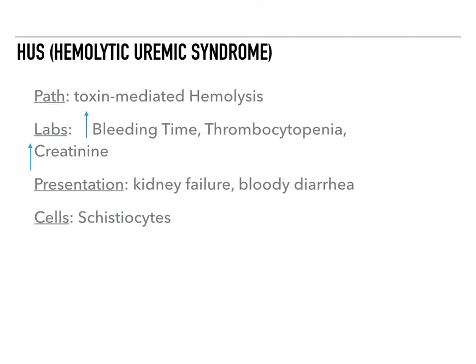The next one is HUS, or hemolytic uremic syndrome. This is a toxic-mediated hemolysis. On labs, you have destruction of platelets causing thrombocytopenia and an increased bleeding time. You also get an increased creatinine, which is very important. The presentation of HUS is that somebody is infected with a certain strain of E. coli called O157:H7, which causes a bloody diarrhea followed by kidney failure. Basically, this is exactly what's happening with TTP, but in the kidney.